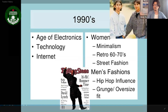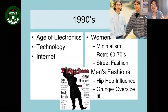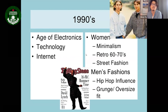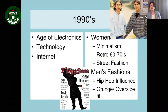In the 1990s, the internet emerged as a key technological development. For women, minimalism was the trend — less accessories, less prints, simpler clothes. The 90s also brought back retro 60s and 70s styles, and street fashion gained attention — skateboard fashion, magazines featuring street styles.